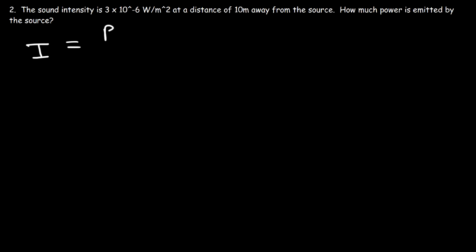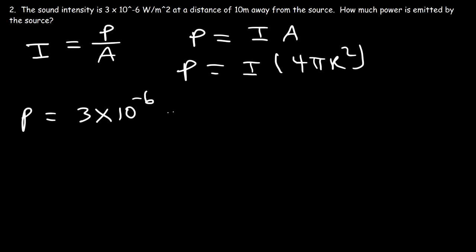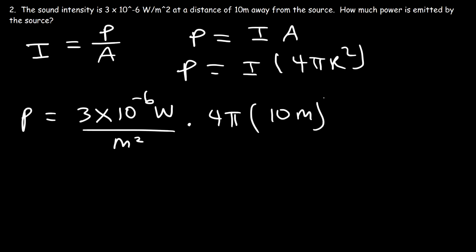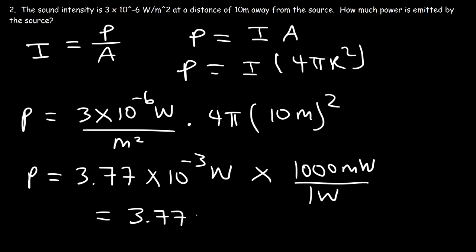Intensity is power divided by area, and power is intensity times area. We use the surface area of a sphere: 4πr². So the power is 3 × 10⁻⁶ watts per square meter multiplied by 4π times 10 meters squared, giving 3.77 × 10⁻³ watts. Converting: there are 1000 milliwatts per watt, so the source emits about 3.77 milliwatts.